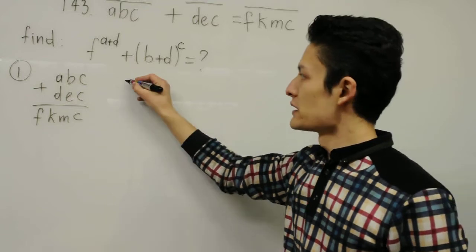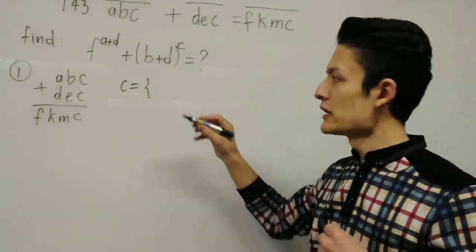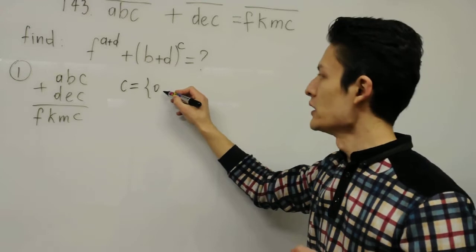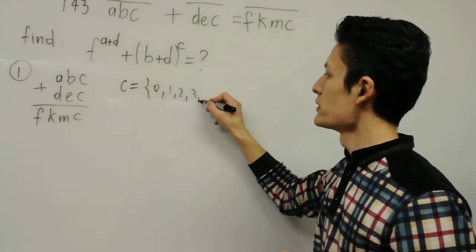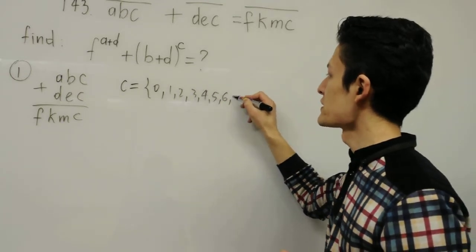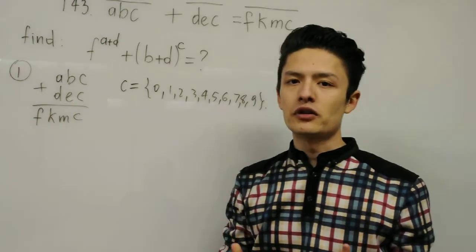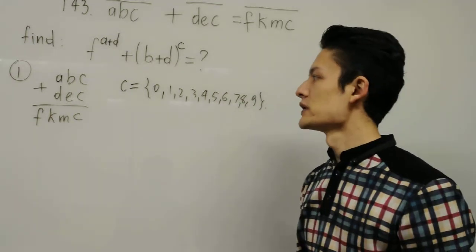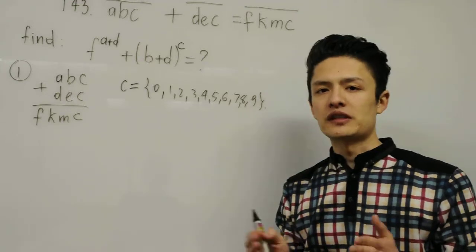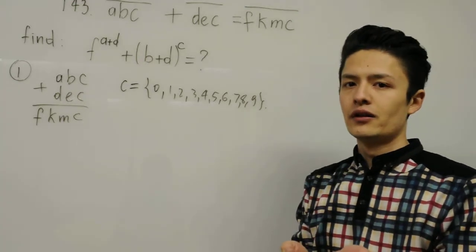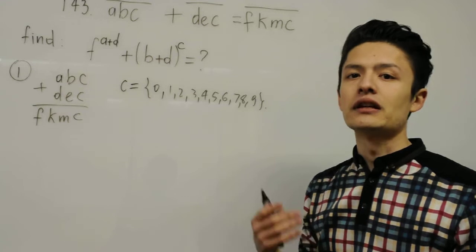We know that C can be, because it's a digit, I say C can be, might be, 0, 1, 2, 3, 4, 5, 6, 7, 8, and 9. I said might be because I want to check all the cases, and C cannot be 10, because 10 is a two-digit number. So 10 is not a digit, it's a number.